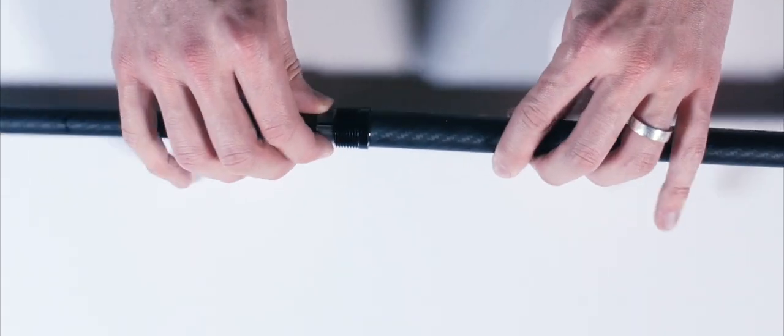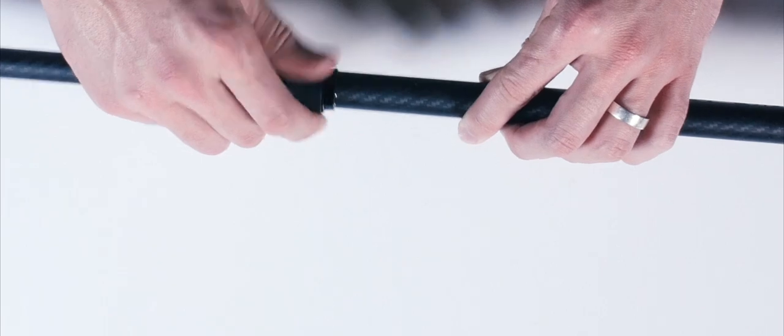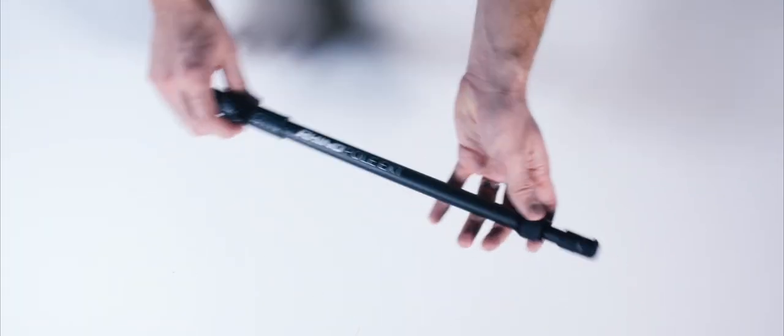Now we can slip the two together and screw on the collar. Tighten it down and we're back in business. If you have any questions or need to replace any of the small parts of your Rhino Pole EXT, then contact support at RhinoCG.com.